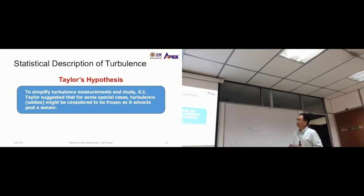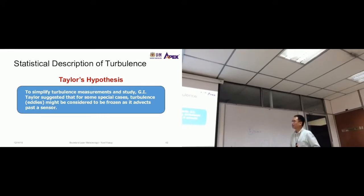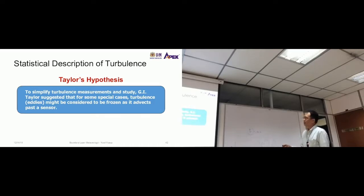So that's what it means by Taylor's hypothesis. We use Taylor's hypothesis to quantify or describe turbulence, and we use statistics to do it. To simplify turbulence measurements and study, G.I. Taylor - the name of a person - suggested, I think in the 1920s or 1910s.